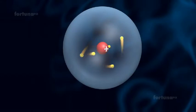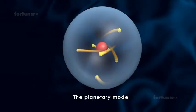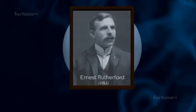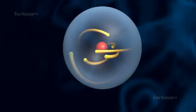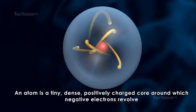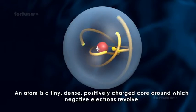The Rutherford Model of the Atom, also known as the Planetary Model, was proposed by Ernest Rutherford in 1911. According to the model, an atom is a tiny, dense, positively charged core around which negative electrons revolve.